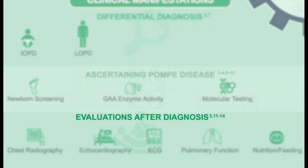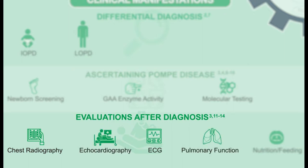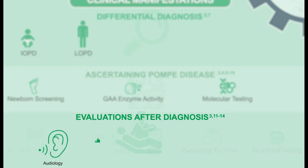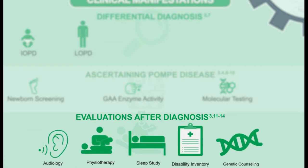Following a diagnosis of Pompe disease, there are specific evaluations recommended to assess the extent of disease involvement and formulate an appropriate management plan. These include chest radiographs, EKG, echocardiogram, pulmonary function testing, evaluation of nutrition and feeding, audiology, physical therapy, a sleep study, a disability inventory, and genetic counseling for recurrence risk.